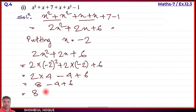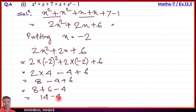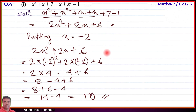Arranging positives and negatives: positive 8, positive 6 gives 14, minus 4. So 14 minus 4 equals 10. The answer is 10. That is the answer for part number one — both the simplified form and the value at x equals minus two.